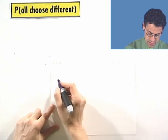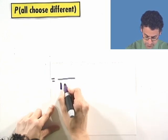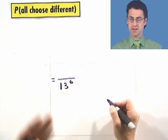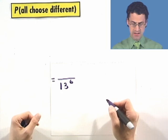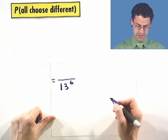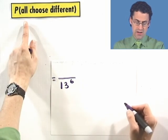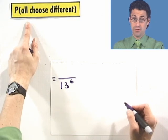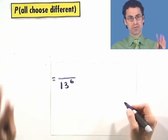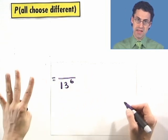Well, the total sample size is easy to see, because the first person can choose any one of the 13, the next person can choose any one of the 13, so forth down the line. So we actually have 13 to the sixth power. That's the total number of ways of having six people choose from 13 costumes with no restrictions, no rules.